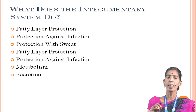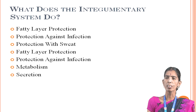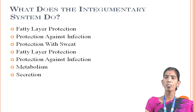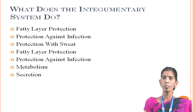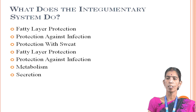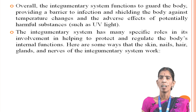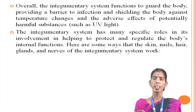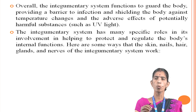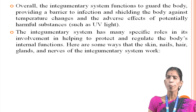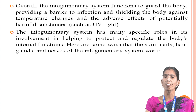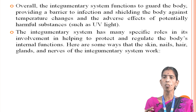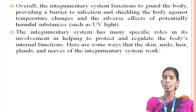What does the integumentary system do? It performs fatty layer protection, protection against infection, protection with sweat, metabolism, and secretion. Overall, the integumentary system functions to coat the body, providing a barrier to infection and shielding the body against temperature changes and the adverse effects of potentially harmful substances such as UV light.